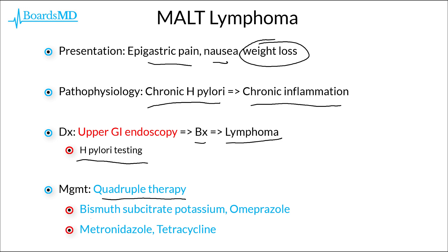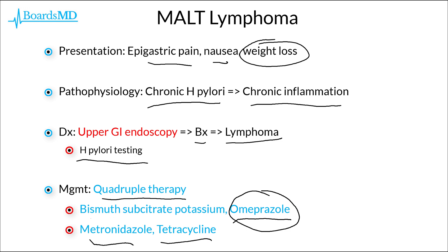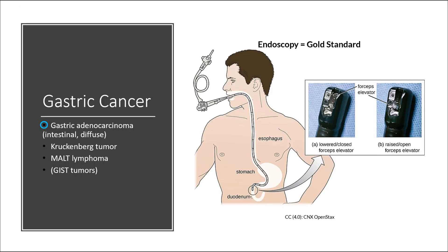When comparing quadruple therapy to triple therapy, the only common thread is the proton pump inhibitor — in this case omeprazole. Triple therapy for H. pylori uses amoxicillin, clarithromycin, and a PPI, whereas quadruple therapy uses metronidazole and tetracycline as the antibiotics. If you can differentiate the intestinal and diffuse subtypes of gastric adenocarcinoma, understand the Krukenberg tumor, and understand MALT lymphoma, you should be in excellent shape for your examinations.